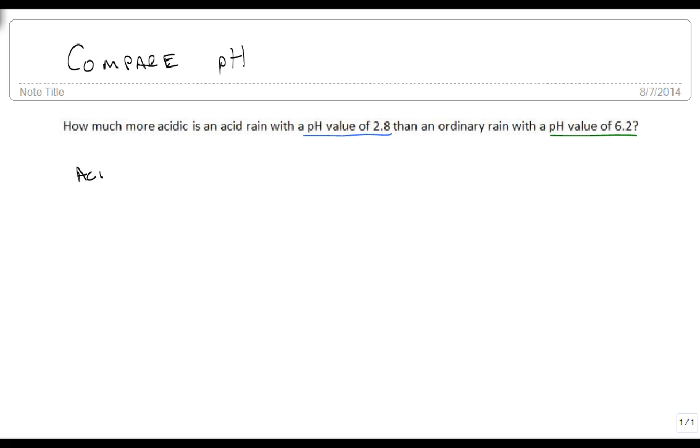So for the acid rain, we know that pH equals 2.8 equals minus the log of H+. So this means that H+ is equal to 10 to the change to the sign and raise it to the power 2.8. So my acid rain has this much concentration of the hydrogen.